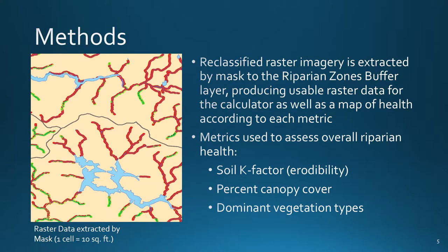To begin, shapefiles made available by MarinMap were compiled to form a base map of rivers and watersheds in Marin County. The 200-foot buffer was applied to the river's shapefile, which was then clipped to selected coastal watersheds. Next, we needed to produce raster imagery for our three metrics: soil K-factor or erodibility, percent canopy cover, and dominant vegetation type.